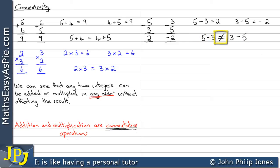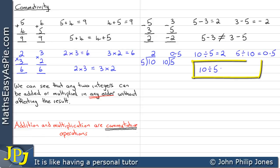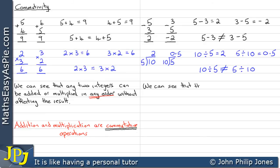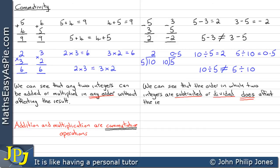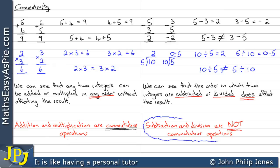This is the not-equal sign. Let's look at division. Let's take ten and divide that by five and we get two. Swap them round and we have five divided by ten, which is point five. So ten divided by five is two and five divided by ten is point five — ten divided by five is not equal to five divided by ten. We can see that the order in which two integers are subtracted or divided does affect the results. Subtraction and division are not commutative operations.